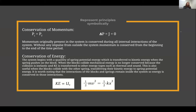The first principle we discussed was conservation of momentum. Since momentum is conserved in a system that doesn't lose mass or have an external force acting on it, we determined that throughout the collision — even though it's inelastic — momentum is conserved since there are no outside forces when considering a system of both blocks. Therefore, the initial momentum of the two-block system equals the final momentum.